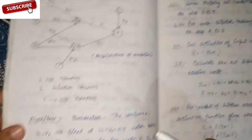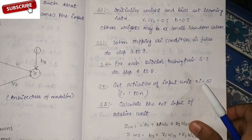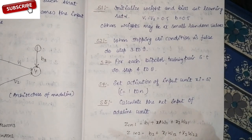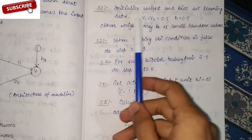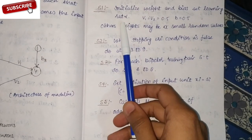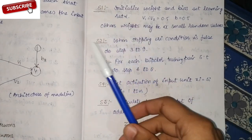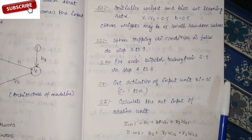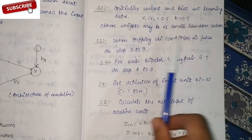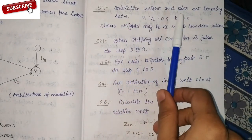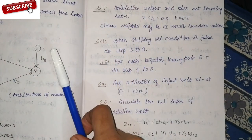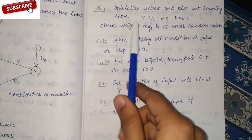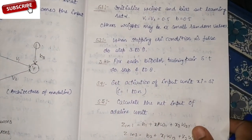Let's do this. We have to explain the steps. Step number one: initialize the weights and biases. Set the learning rate, which is called alpha. Initialize the weights W and biases B with small random values, and set the learning rate alpha.